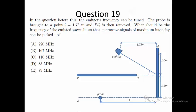The probe is brought to a point 1.73 meters and metal plate PQ is then removed, meaning the barrier is no longer there. What should be the frequency of the emitted waves so that microwave signals of maximum intensity can be picked up?